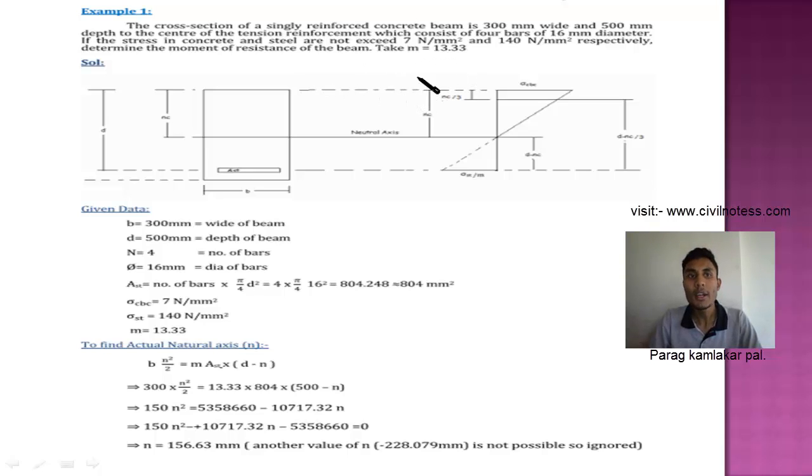We have to determine the moment of resistance. First of all we have the given data: B equals 300 mm wide, D equals 500 mm effective depth, number of bars is 4 of 16 mm diameter. AST we have to determine, the total area of steel provided in this concrete beam is determined by number of bars multiplied by pi by 4 into D square. So 4 bar multiplied by pi by 4 multiplied by 16 square which is 804 mm square.